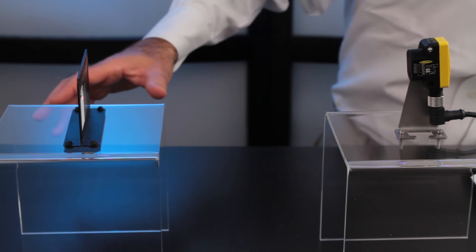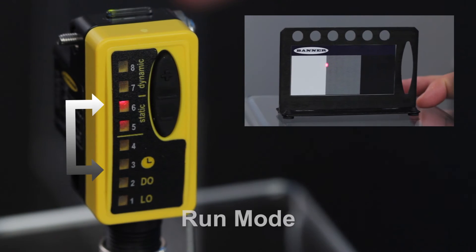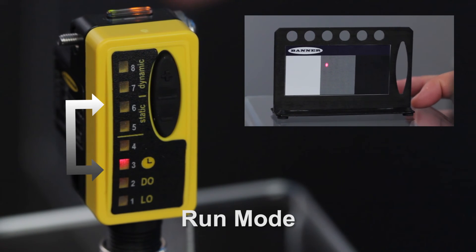The bar graph will show the quality of the contrast between switching points on a scale of 1 to 8, with 8 being the best, and then the sensor returns to run mode.